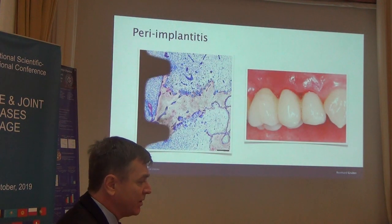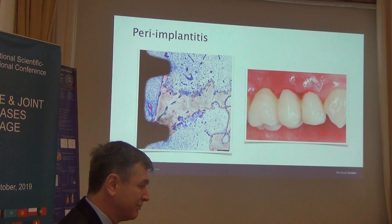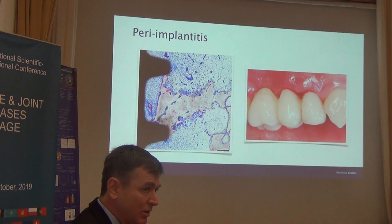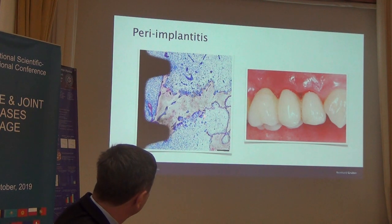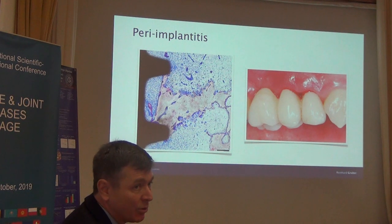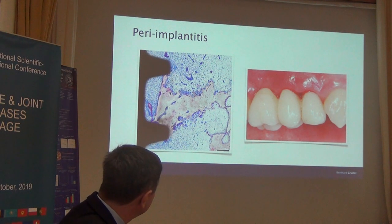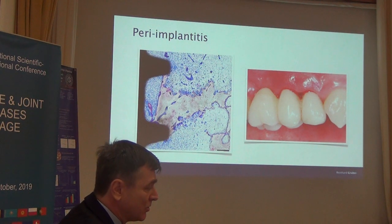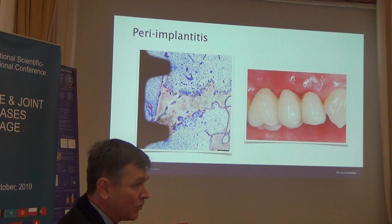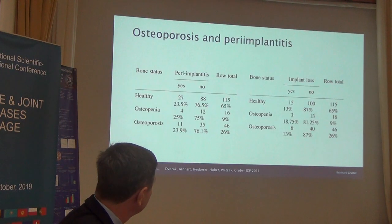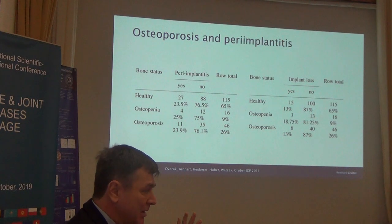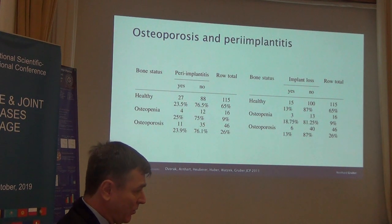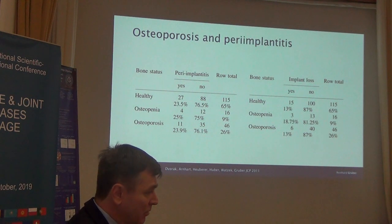There is another issue we are very concerned about: peri-implantitis. Peri-implantitis affects around 10–20% of implants over time. You have osteoclasts removing all the bone, no bone formation, and bleeding — a very serious issue. The question is whether osteoporosis is a risk factor for peri-implantitis. The answer is no — peri-implantitis is independent of osteoporosis. Whether this is good or bad news, that is what the data shows.